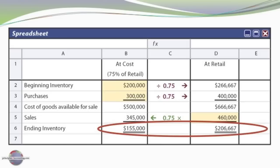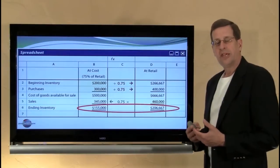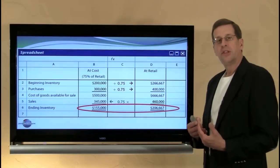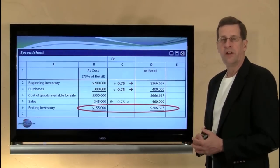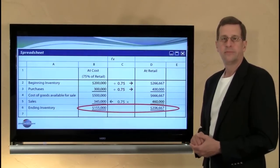The presumed ending inventory at retail of two hundred six thousand six sixty-seven — seventy-five percent of that amount — gives a cost of one hundred fifty-five thousand for balance sheet reporting. We arrived at the retail figure by backing out sales from goods available for sale, or alternatively by physically counting goods in the store and summing their retail prices. The retail method is an excellent tool to quickly determine the cost of inventory for financial reporting purposes in a retail environment with a consistent markup.